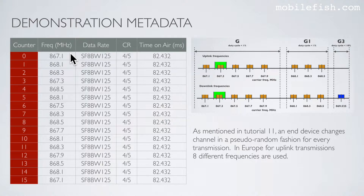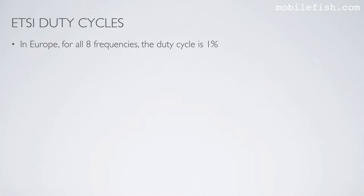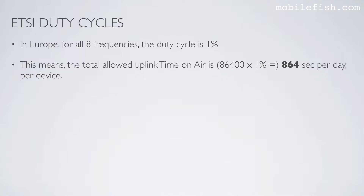And here is the proof: the frequency changes for every transmission and all 8 frequencies are used. In Europe, for all 8 frequencies, the duty cycle is 1%. This means the total allowed uplink time on air is 864 seconds per day per device. Please note a day has 86,400 seconds.